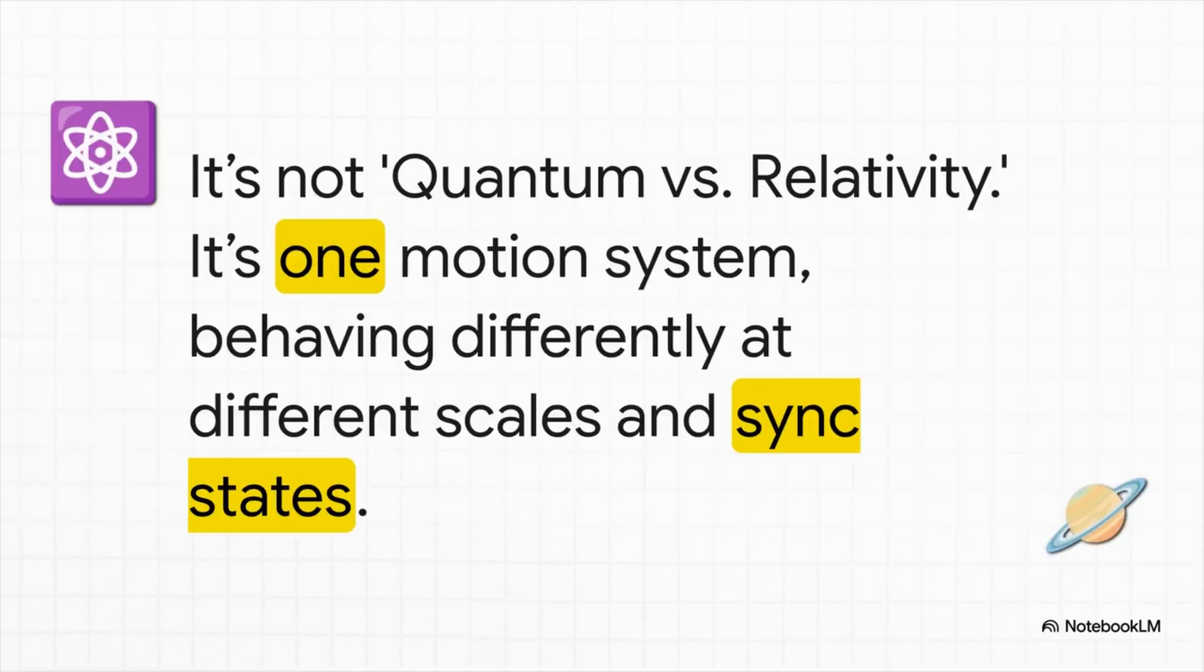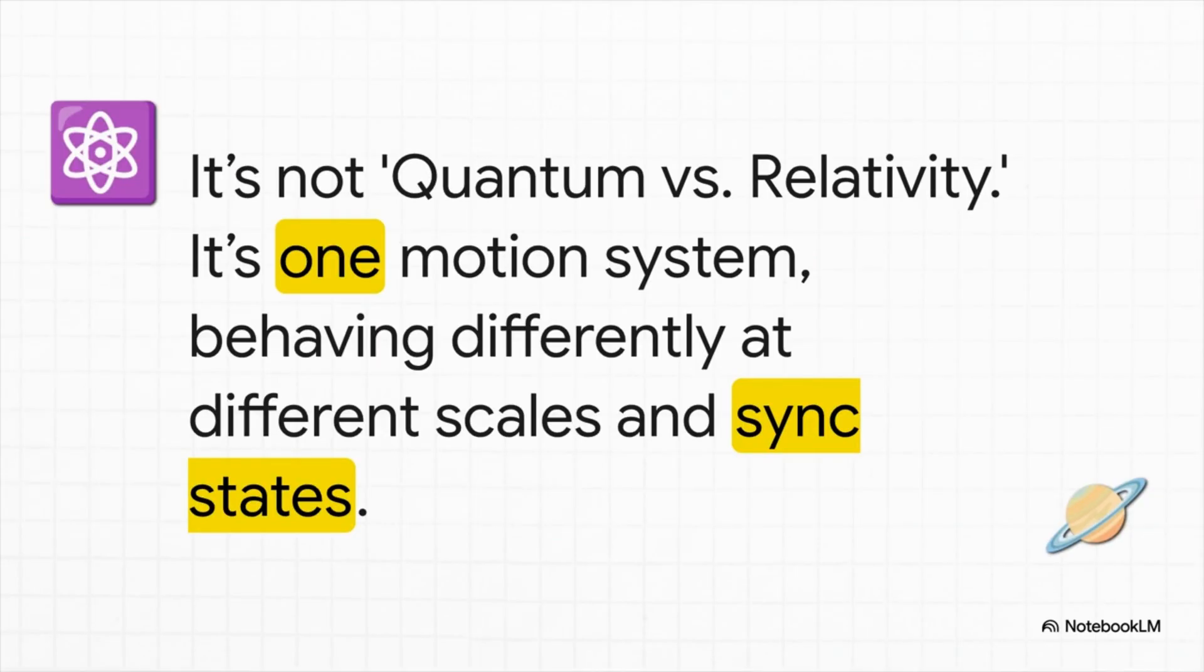And this, right here, this is the holy grail of modern physics. You've heard of the big problem, right? How quantum mechanics and general relativity just don't play nice together? This theory says that conflict is an illusion. It's not quantum versus relativity—it's just one single system of motion, it just acts differently depending on the situation. You get the weird, probabilistic dance of a loose, floppy motion loop at the quantum level, and the stable, predictable path of a huge, tightly synchronized system, like a planet, at the cosmic level. Same system, different behaviors.